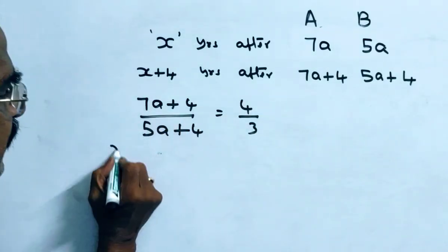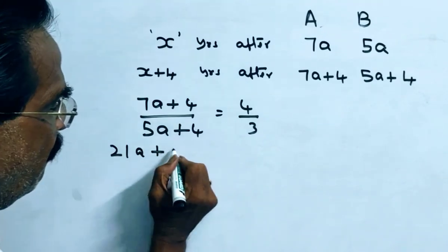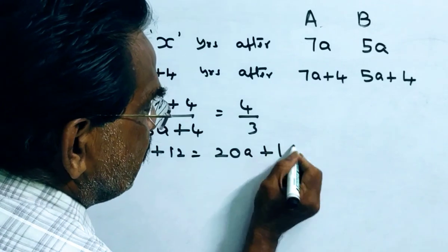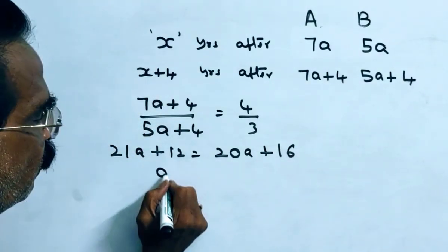So 21a plus 12 equals 20a plus 16. It implies a equals 4.